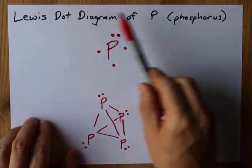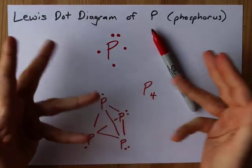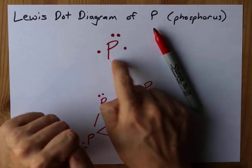I think you're asking for the Lewis dot diagram of phosphorus. Best of luck to you. This is it.